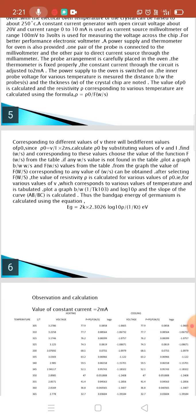That is, for various values of V which corresponds to various values of temperature, and is tabulated. Plot a graph between 1 by KT 10 raised to cube and log10 of rho, and the slope of the curve AB by BC is calculated. The band gap energy of germanium is calculated using the equation Eg equal to 2K into 2.3026 into log base 10 rho divided by 1 by KT.